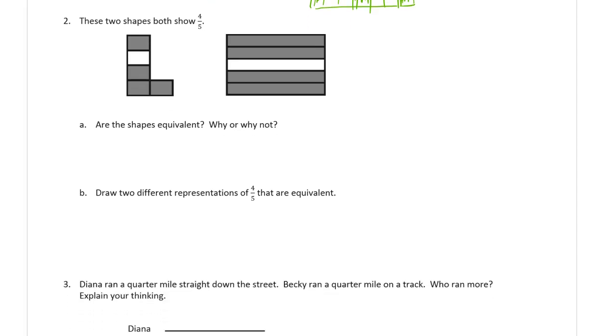These two shapes both show four fifths. One, two, three, four, five. Four of them are shaded. And one, two, three, four, five. Four of those are shaded. Are the shapes equivalent? Why or why not?